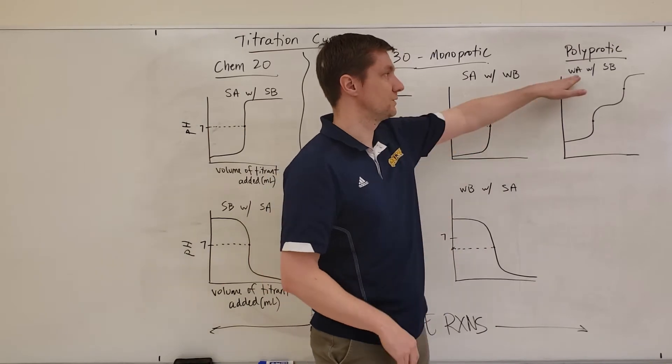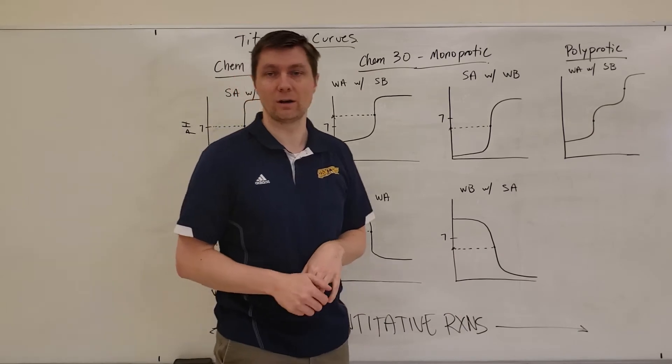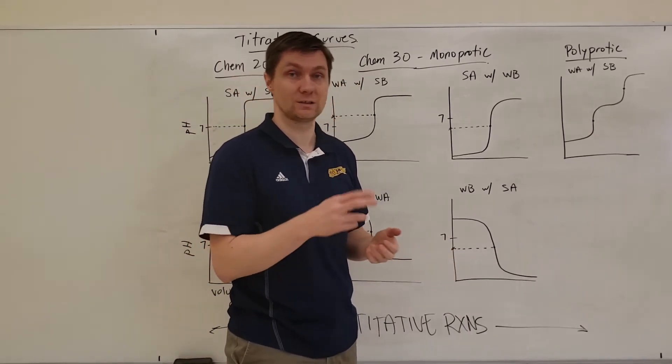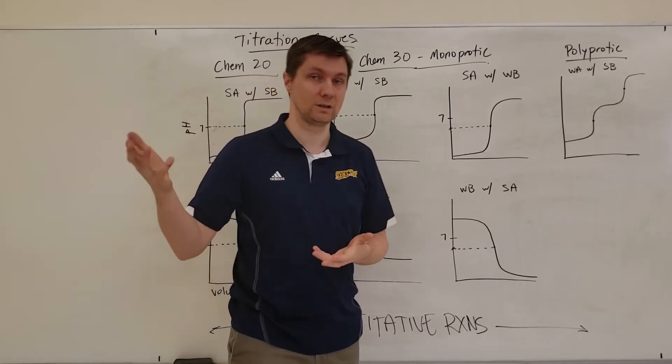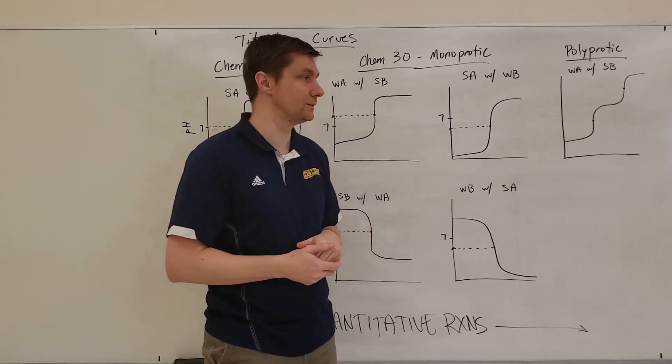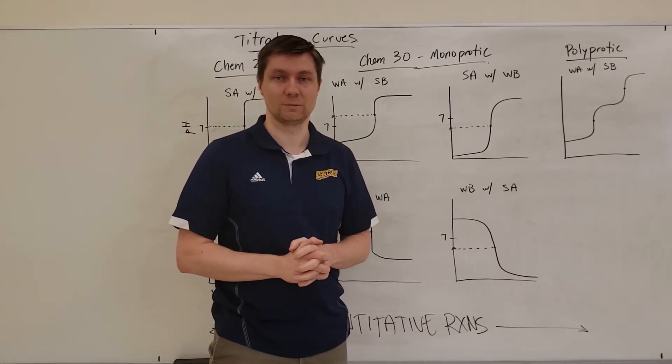So you can see here I've got a diagram that shows I've got two equivalence points. I'm titrating this weak acid with a strong base in this case, which maybe is a carbonic acid, H2CO3. It's got two protons that it can donate to a strong base, let's say hydroxide ions. And I would end up with a titration curve that looks something like that.